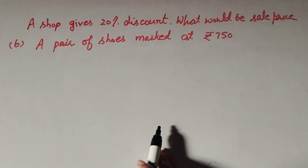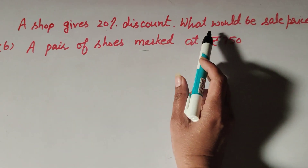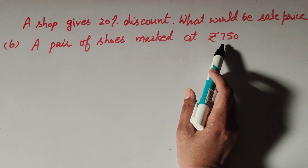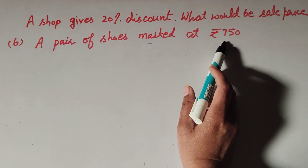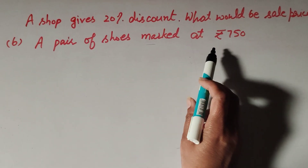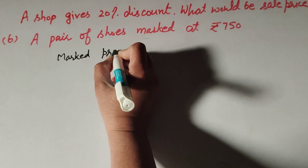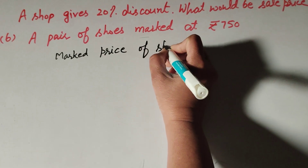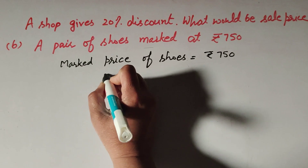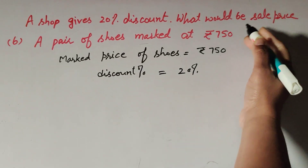Hello friends, welcome to my channel. In this video we discuss: a shop gives 20 percent discount — what would be the sale price? Part A: a pair of shoes marked at rupees 750. The given information is discount percentage and marked price, and we need to find the sale price. Marked price of shoes equals rupees 750, and discount percentage equals 20 percent.